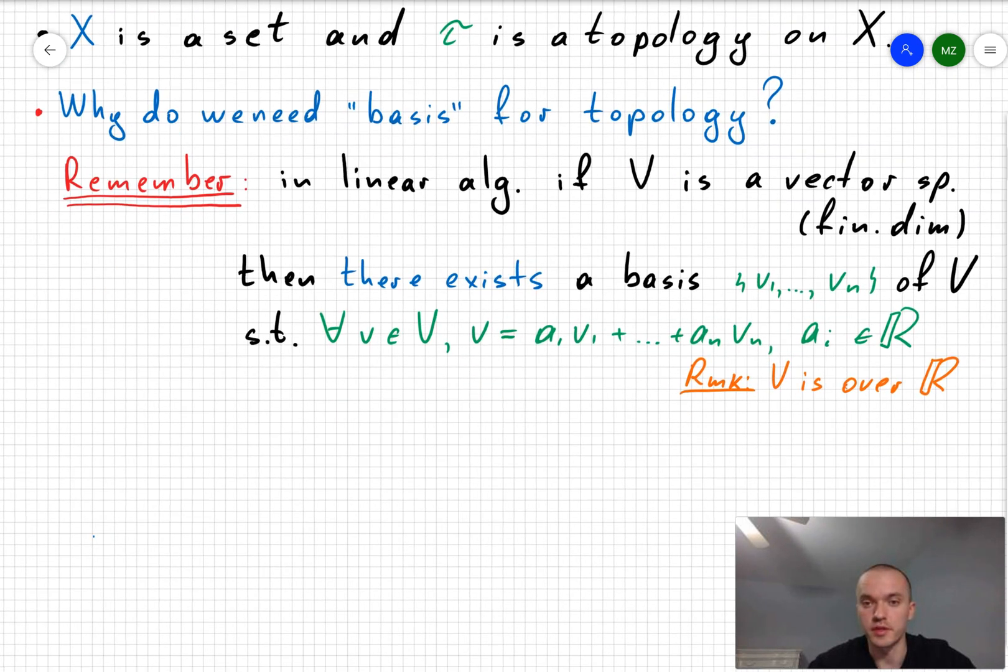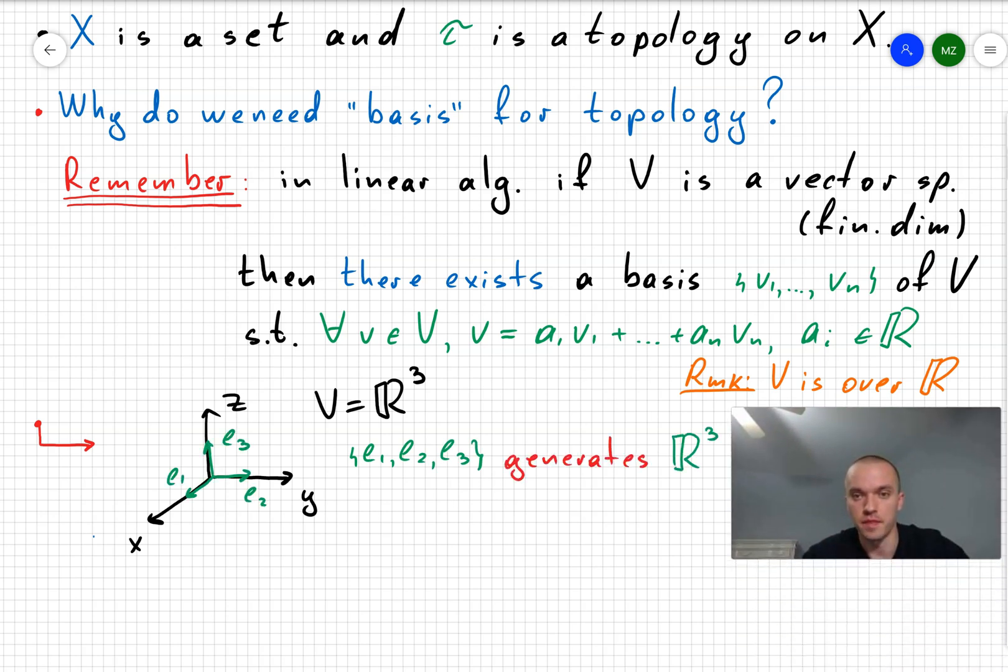For example, let's take a three-dimensional vector space. Then in this case I can choose a basis to be unit vectors along x, y, and z direction. And those vectors are going to generate R³.